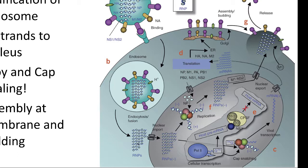This is very unusual for an RNA virus: these RNAs have a signal that causes them to be imported into the nucleus. Once in the nucleus, the viral replicase starts copying the negative strand to a positive strand, and then it does something very interesting — it steals caps from host mRNA that's being formed. It snatches the cap and puts it on the viral mRNA, and this is how it makes a messenger RNA.